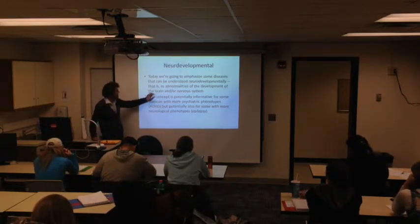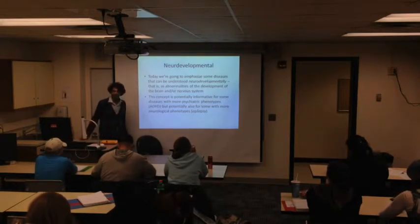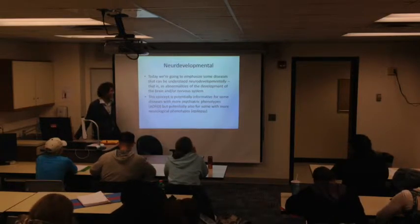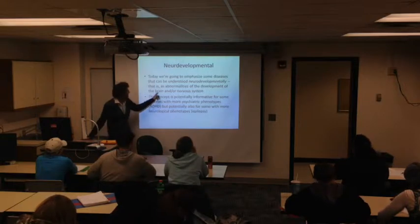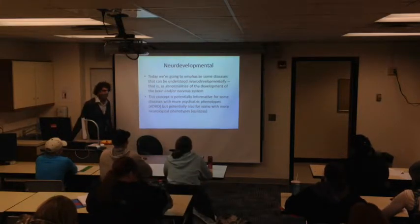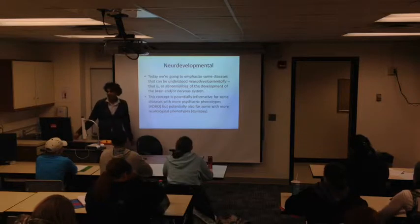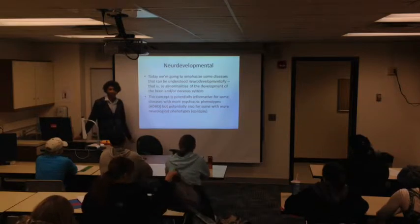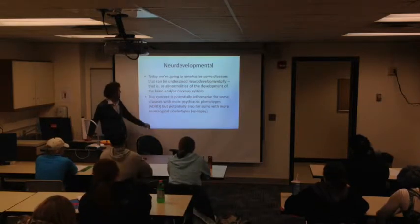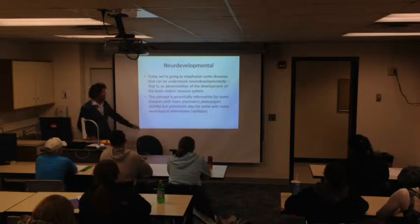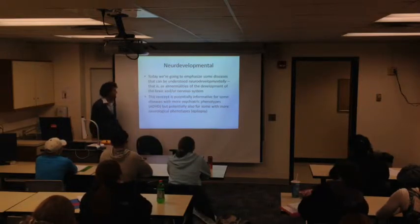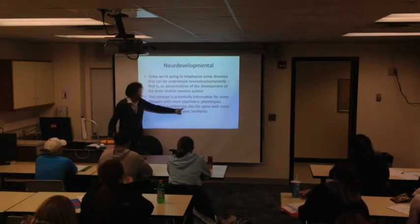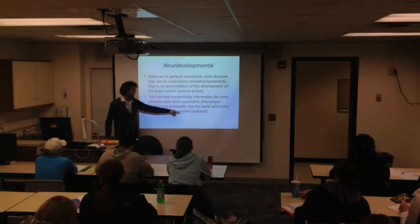Here we're interested in diseases that have to do with abnormality in brain development. That could be abnormality triggered by the environment — an example would be fetal alcohol syndrome. It could be an abnormality primarily triggered by genes, something like MR. And then some things triggered by both genes and environment, like autism most likely is. I also want to mention that this is a potentially informative concept — neurodevelopmental disease — not just for psychiatric disorders like ADHD or autism, but also for disorders we call neurological, like epilepsy.